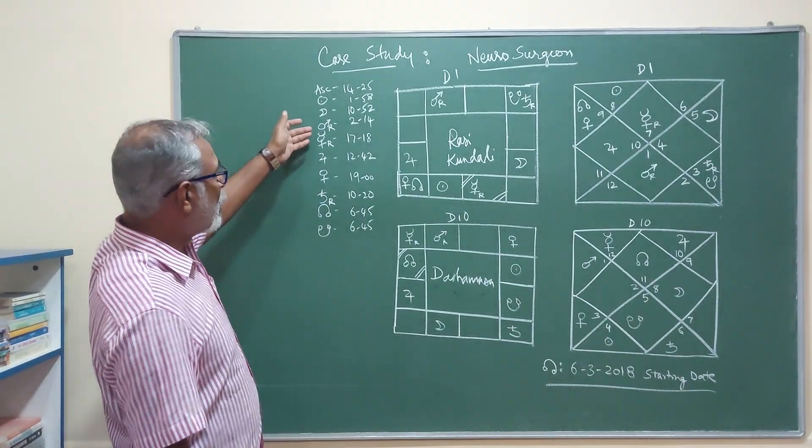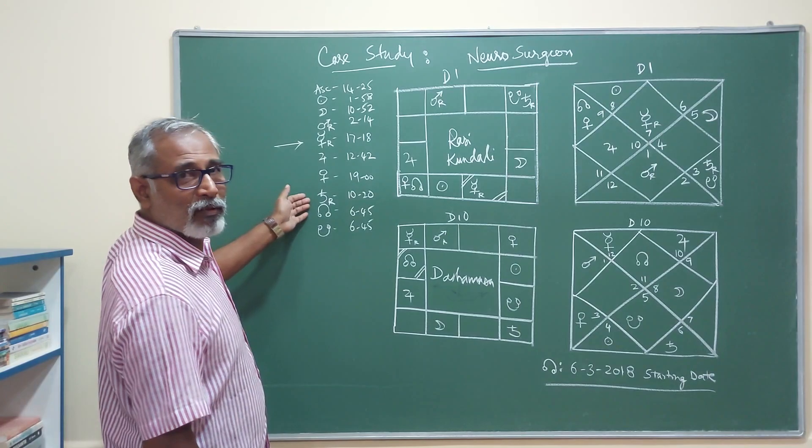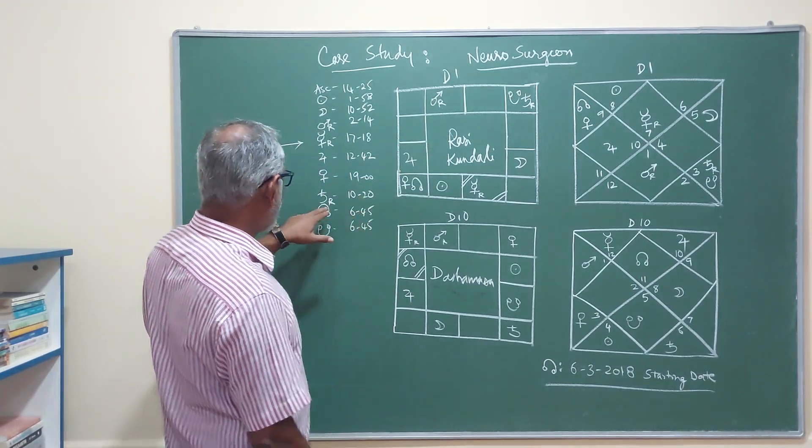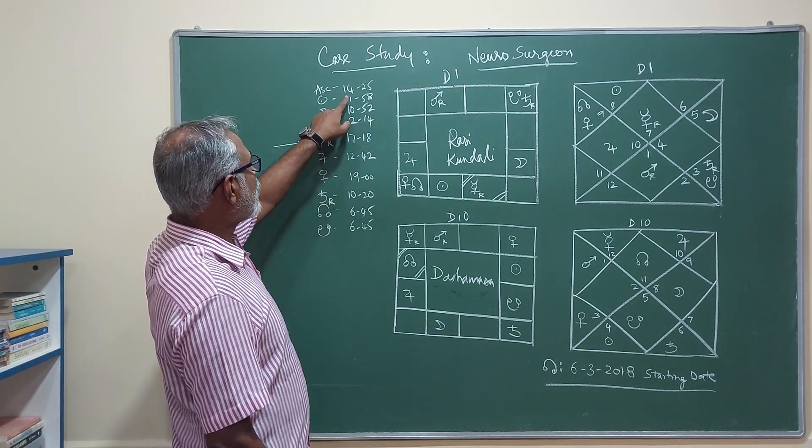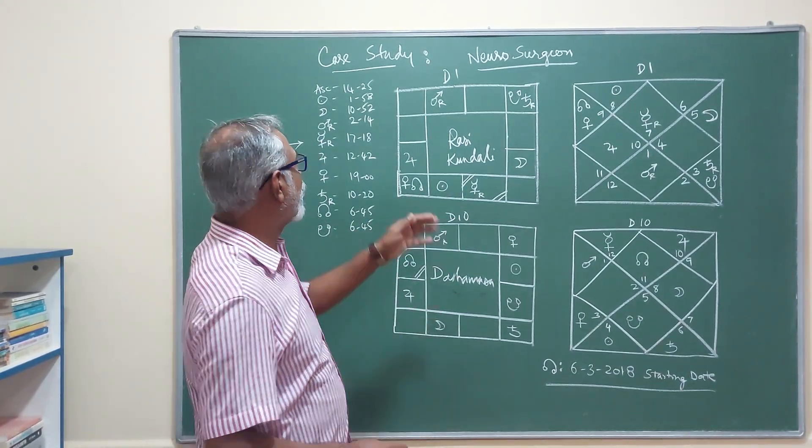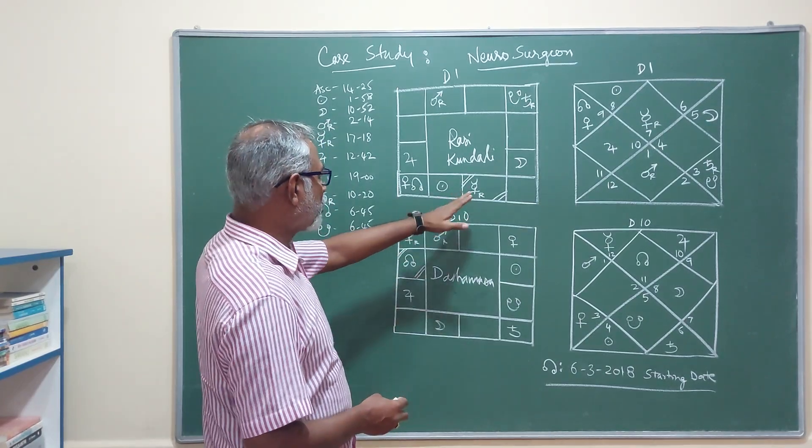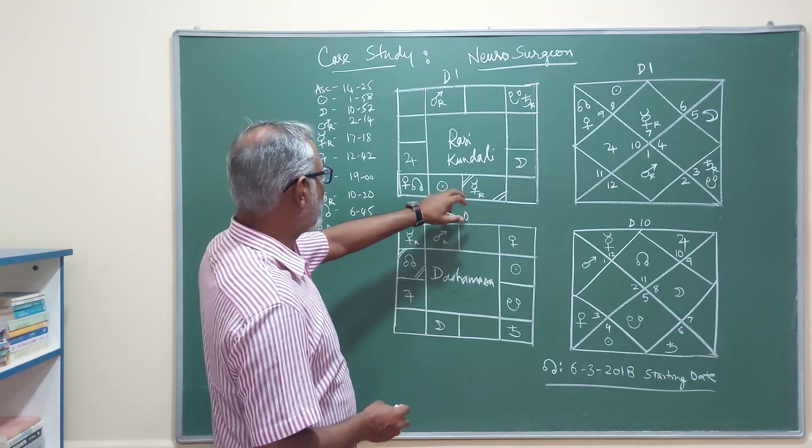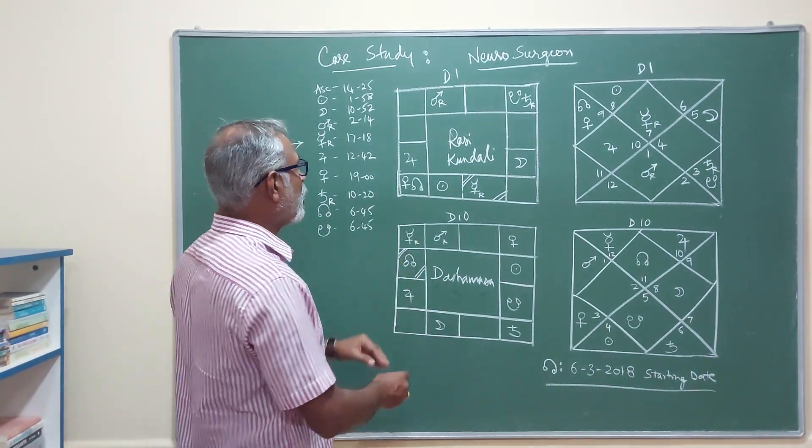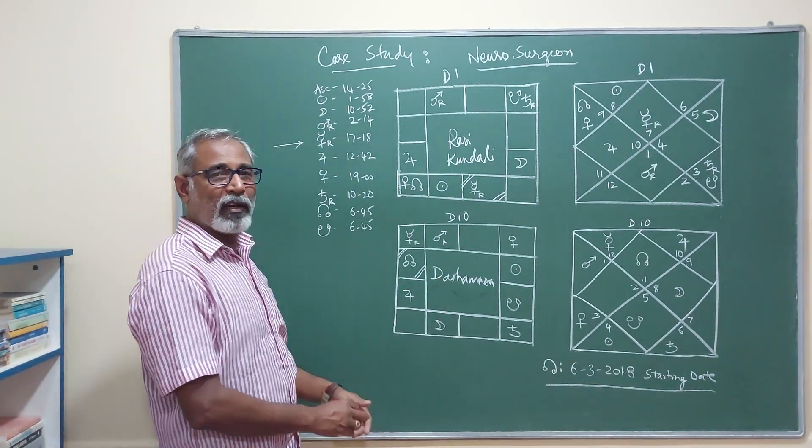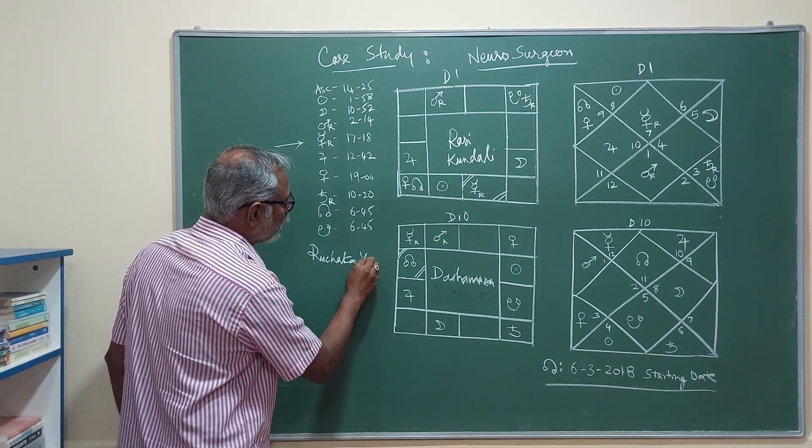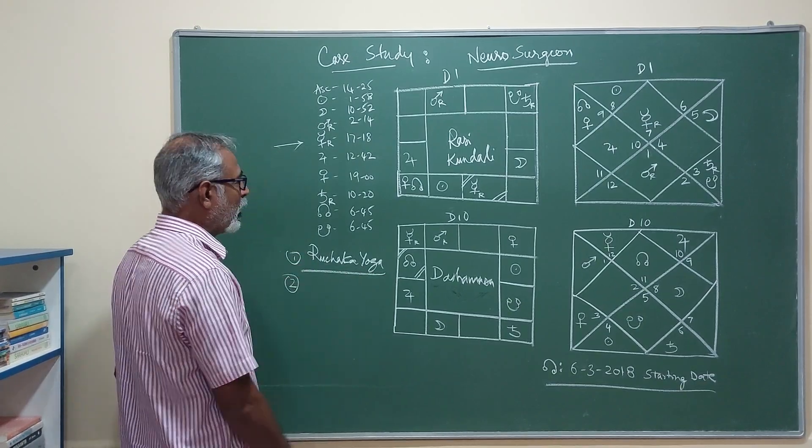Saturn is also retrograde there. So there are three planets which are retro in the chart: Mars, Mercury, and Saturn. Mars is placed in the seventh house at 2 degrees and 14 minutes. The ascendant is at 14 degrees 25 minutes in Libra. Mars stays in the seventh house giving rise to a strong yoga which is a ruchaka yoga.